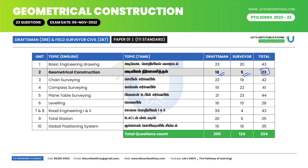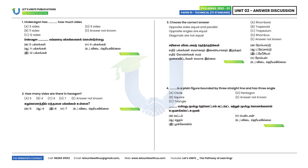First question: Undecagon has how many sides? Undecagon has 11 sides. Option B is the correct answer. For reference: 5 sides is a pentagon, 12 sides is a dodecagon, and 9 sides is a nonagon.